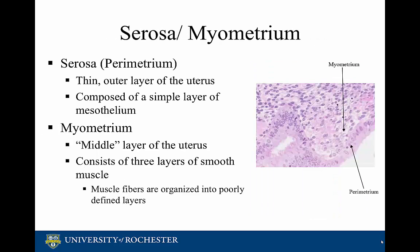The perimetrium or serosa is the thin outermost layer of the uterus, composed of a simple layer of mesothelium. The myometrium, or the middle layer of the uterus, consists of three layers of smooth muscle, with the muscle fibers organized into poorly defined layers.